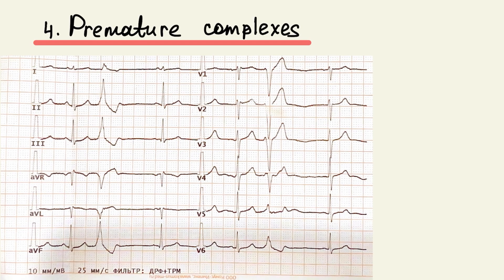Premature complexes. Single atrial or ventricular premature complexes are normal for every person. On this ECG, we can see a ventricular premature complex — broad and abnormal with discordant ST segment and T wave changes, usually followed by a fully compensatory pause.